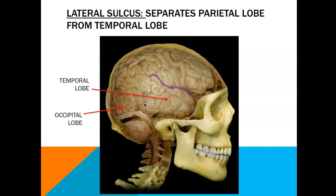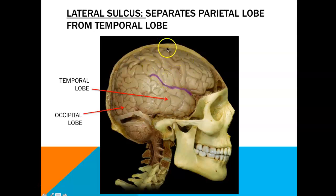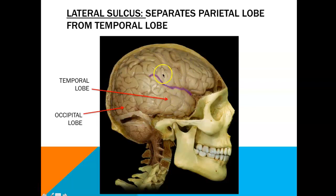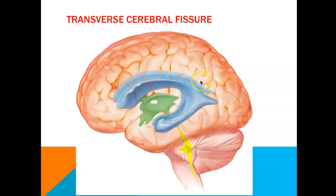Now let's move into some new terminology. Sitting between the temporal lobe and our parietal lobe above is our lateral sulcus. This sulcus is a depression and separates the temporal lobe from the parietal lobe. We can also see back here is your occipital lobe, and this would be your frontal lobe. Another fissure we need to be aware of is the transverse cerebral fissure, found between the cerebrum and the cerebellum.